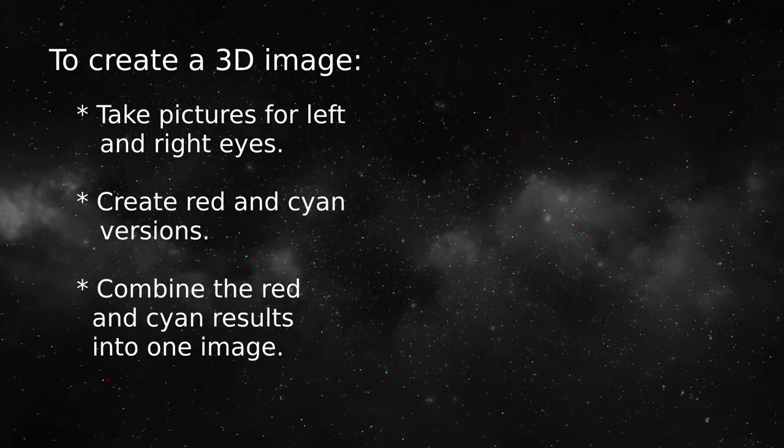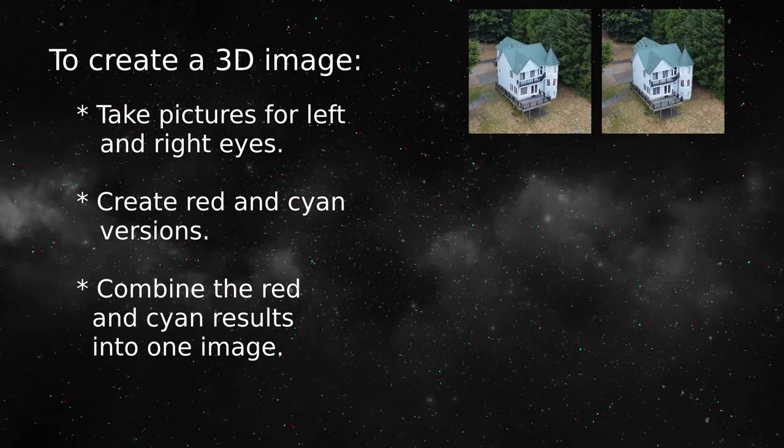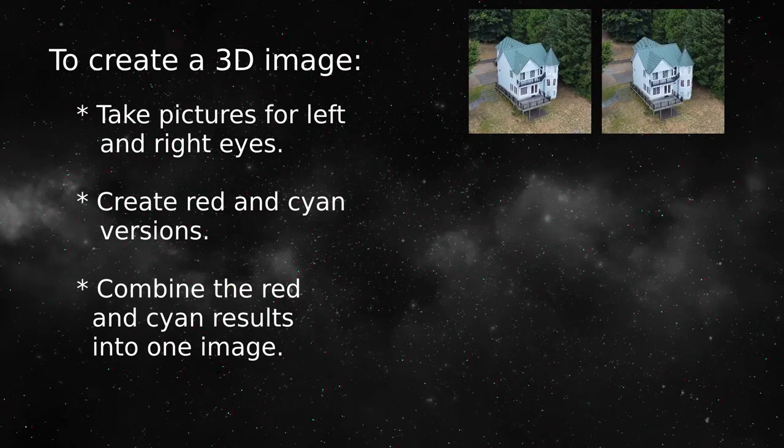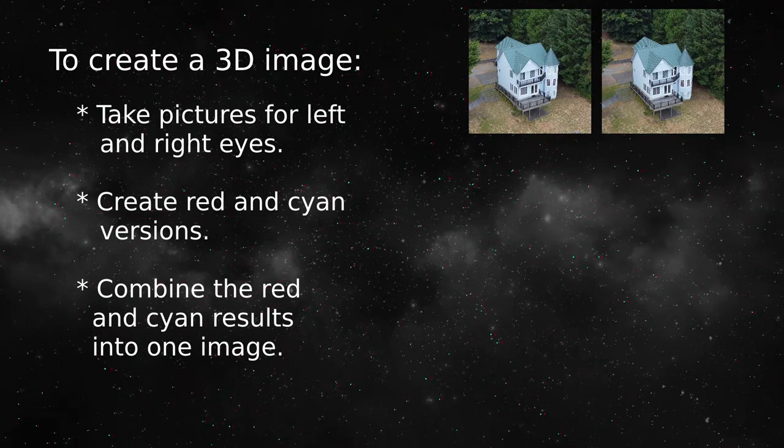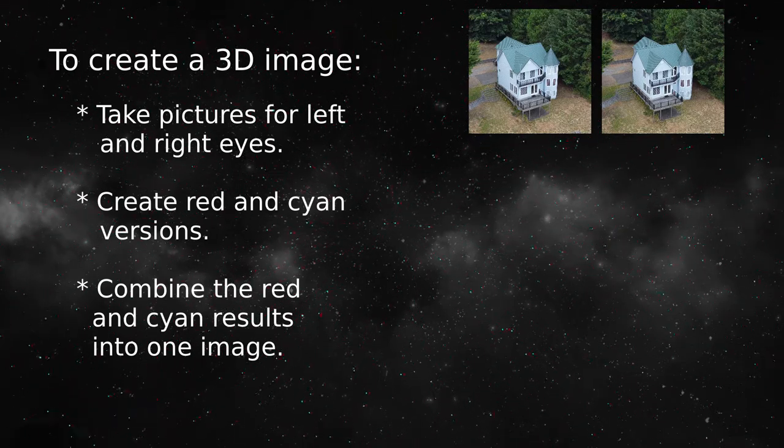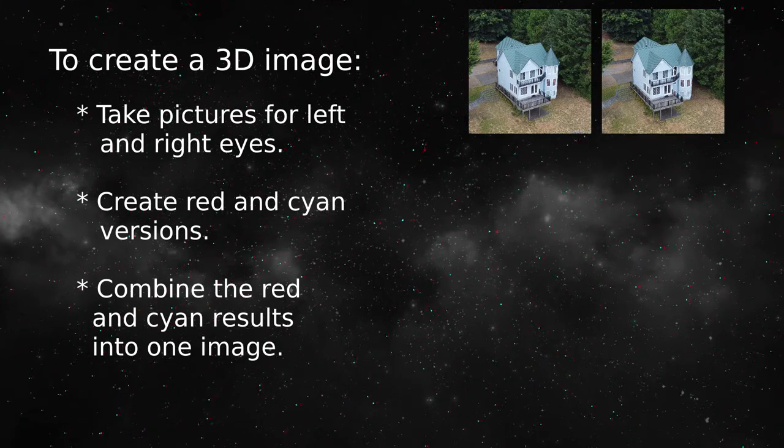To create a 3D image, first you take two pictures at slightly different positions, imitating the position of our eyes. For this example, I used a quadcopter. I snapped a picture, then moved the drone horizontally and snapped another picture.